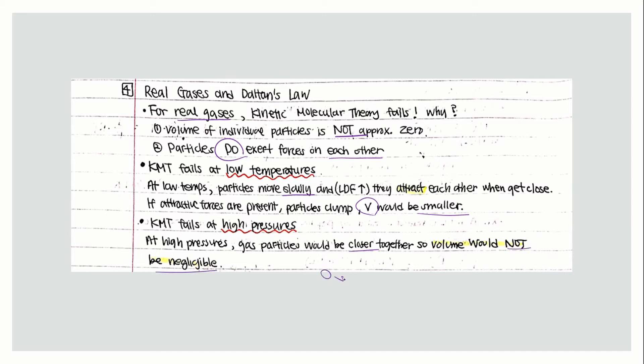As they get closer to each other, you will actually be able to measure the approximate volume of the actual gas particles. For ideal gases, they should have negligible volume because they are so far apart that you can only measure the volume of space, not the actual particles.